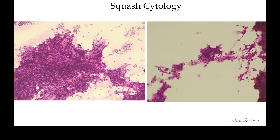Let's unfold the story. Initially we got a squash cytology — the smears were quite cellular, arranged in a papillary pattern at places, along with nuclear pleomorphism. However, there was no glial background. At this point we had a talk with the neurosurgery team, and they informed us the tumor was highly vascular and the patient was hemodynamically unstable.